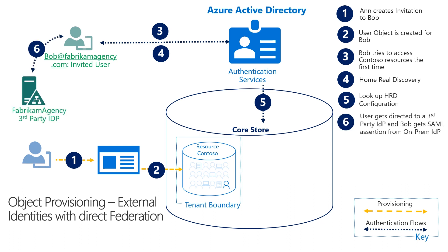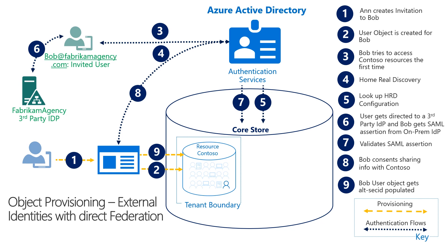In step six, the authentication service redirects the user to the federation service per the configuration — in this case, talking to ADFS. After Bob authenticates, it will send a SAML assertion back to the authentication service. In step seven, Azure AD authentication service validates the SAML assertion. After that, steps eight and nine are exactly the same as the previous cases.